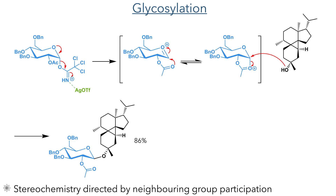The glycosylation of this oxocarbenium can be directed by anchimeric assistance, also known as neighbouring group participation. This occurs when the oxygen of the acetate group present at the 2 position attacks the 1 position, forming a 5-membered ring. As the 2 position of glucose has an equatorial configuration, the formation of this 5-membered ring blocks the bottom face of the molecule, directing the glycosyl acceptor to preferentially add to the top face of the molecule, forming the beta-glycosidic linkage in an 86% yield.